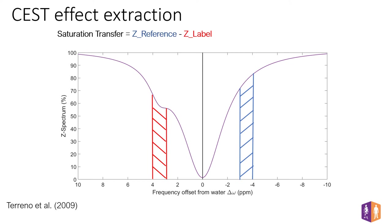We will focus on CEST signal extraction. During the continuous application of RF pulses, other competitive effects take place together with the saturation transfer, such as direct water saturation and magnetization transfer contrast. These competitive effects need to be removed for a correct reading of the CEST contrast. Based on the assumption that direct saturation and magnetization transfer contrast effects are symmetrical with respect to the water frequency, the difference between the labeled area at the resonance frequency of the molecule of interest and the reference area on the opposite spectral location is used to isolate the CEST signal. This difference is also known as the saturation transfer effect.